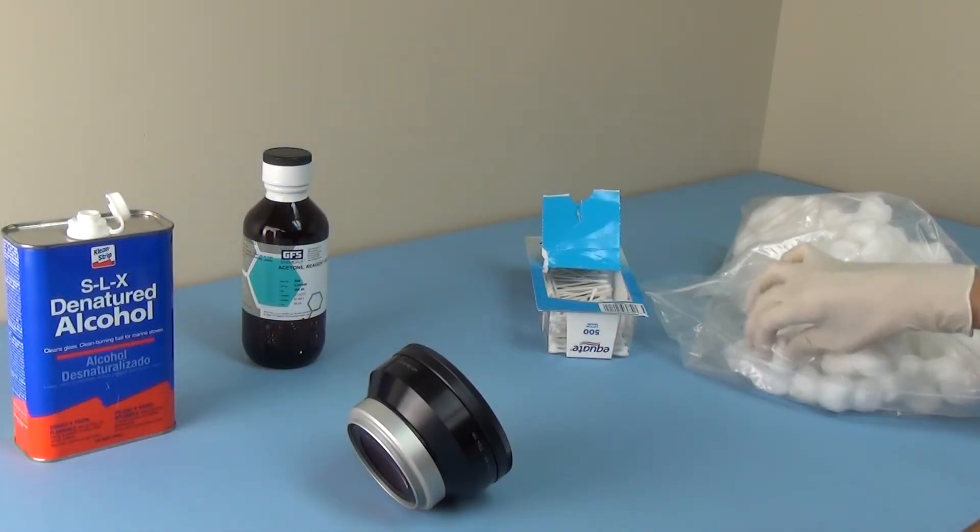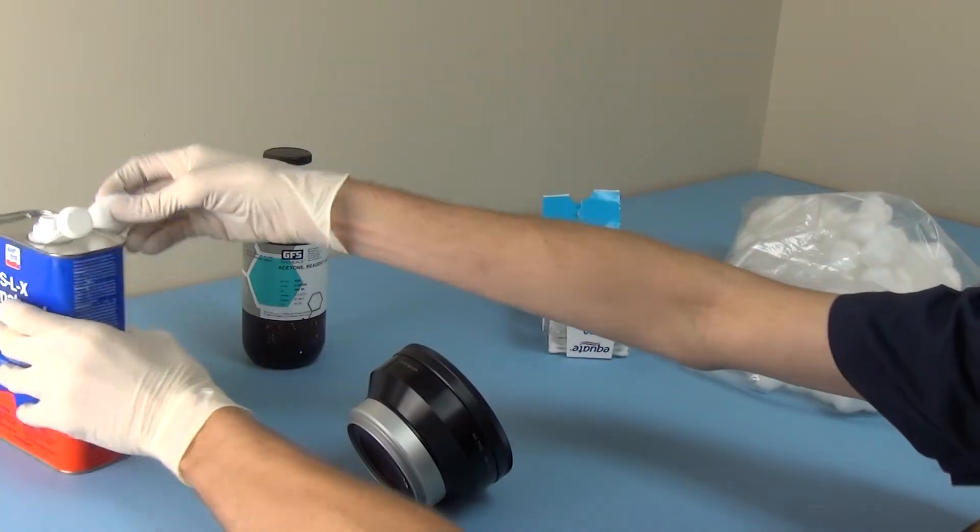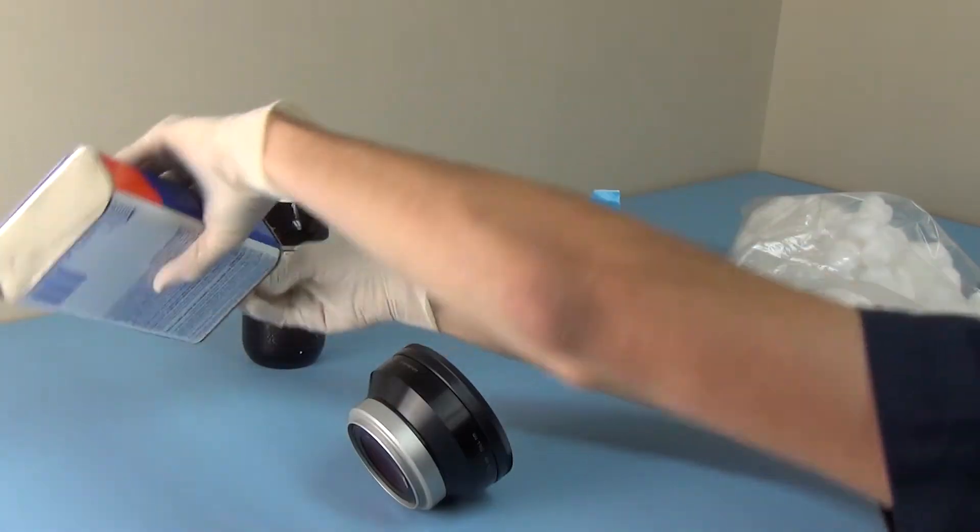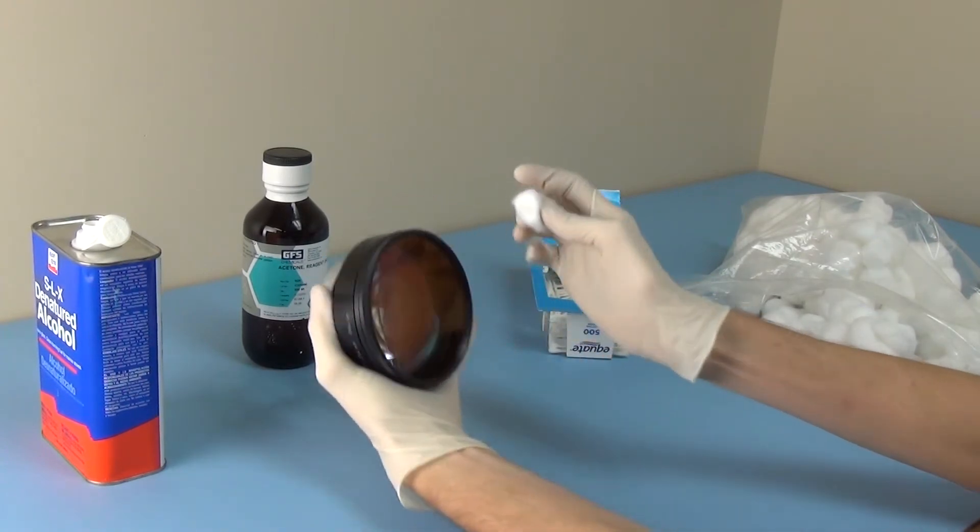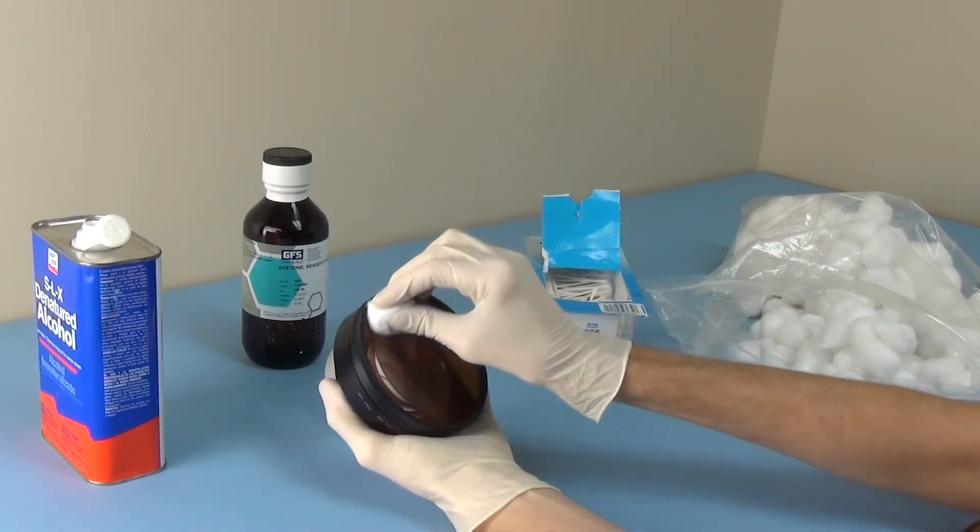While wearing latex gloves, use cotton with acetone to clean the lens. Denatured alcohol can also be used if acetone isn't available. Clean the bottom side of the lens, being careful not to scratch the glass.